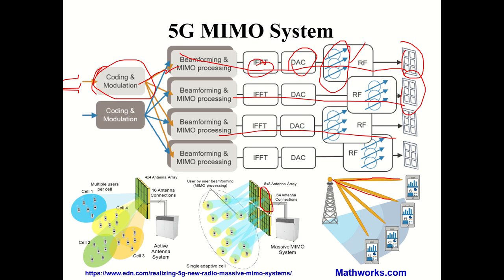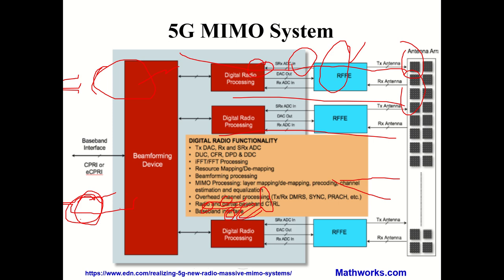In 5G, each MIMO element is itself an array — for example, 4x4 or 8x8 arrays. As the number of elements in the array increases, the beam can be made narrower and directed more precisely. With a 4x4 array the beam is somewhat wide, covering a hotspot. With a larger array, you can direct a very narrow beam (data beam) toward each individual mobile device — whereas with a smaller array you are still radiating across a sub-cell area even without users present.